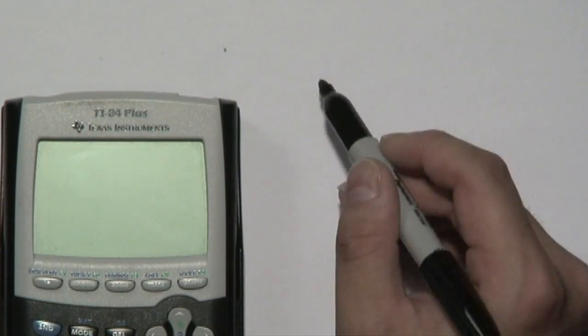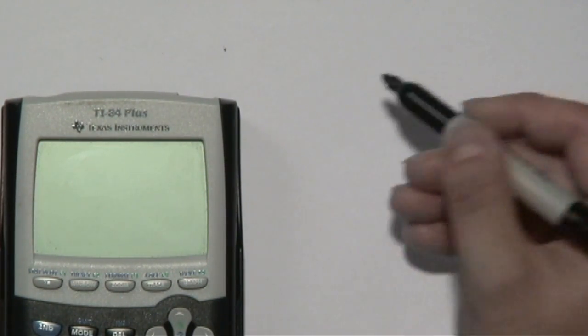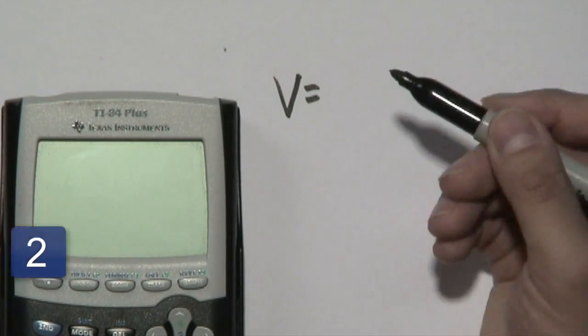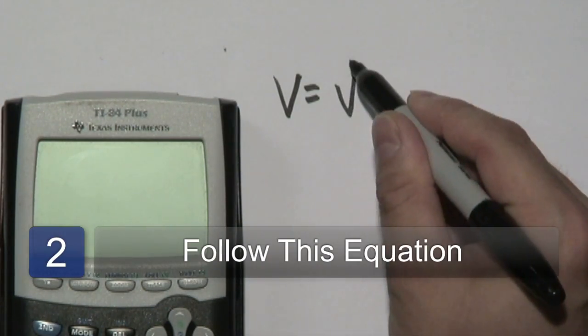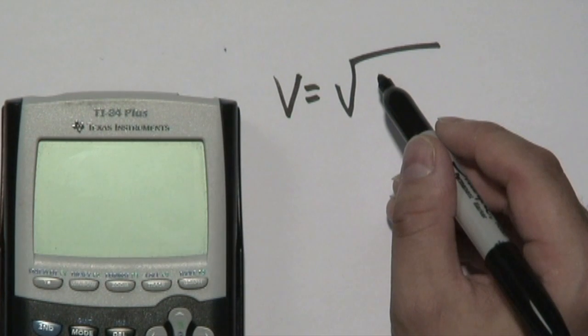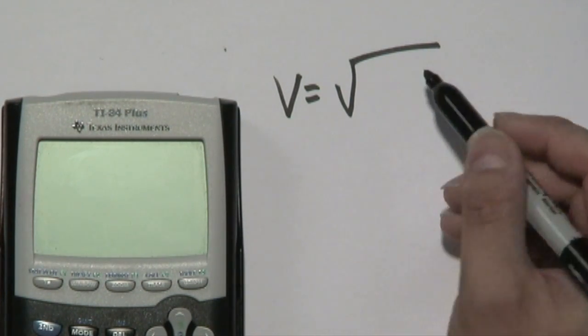In other words, it's the velocity required to keep that satellite in orbit. Now here's the formula associated with that. It's a rather complicated looking square root, but once you see what each of these stands for, then it wouldn't be too bad after all.